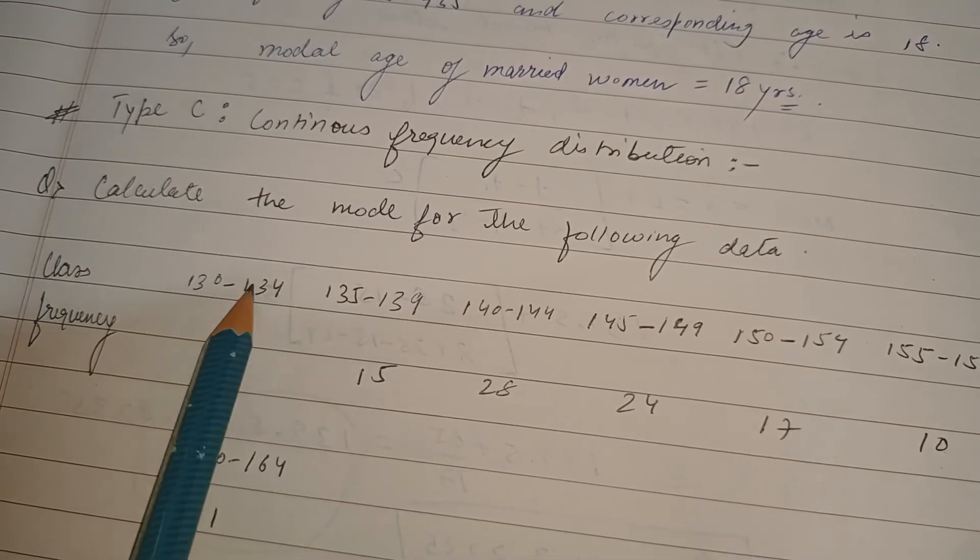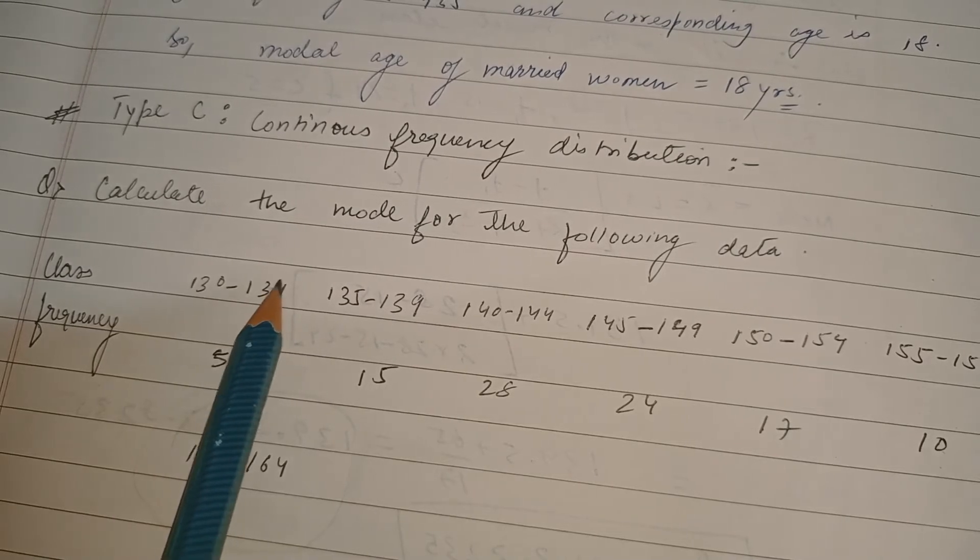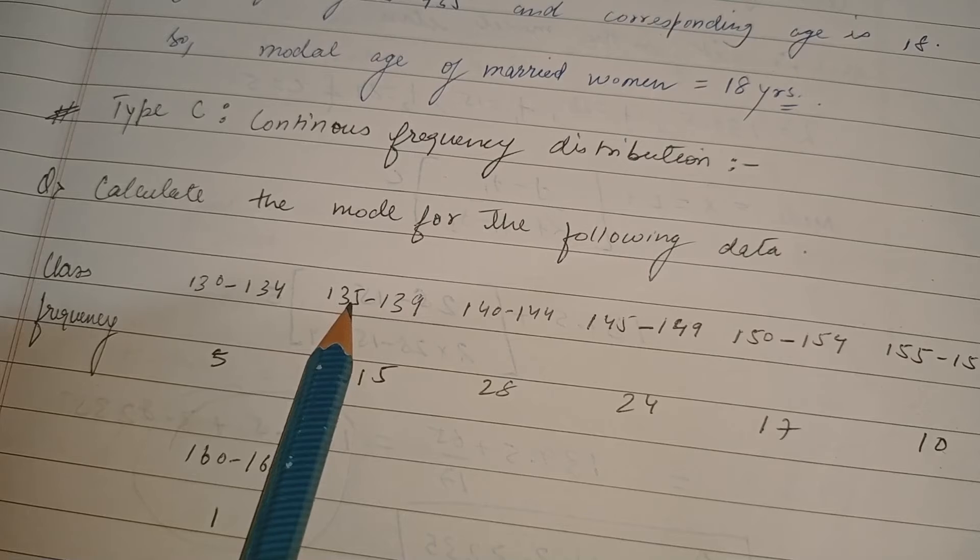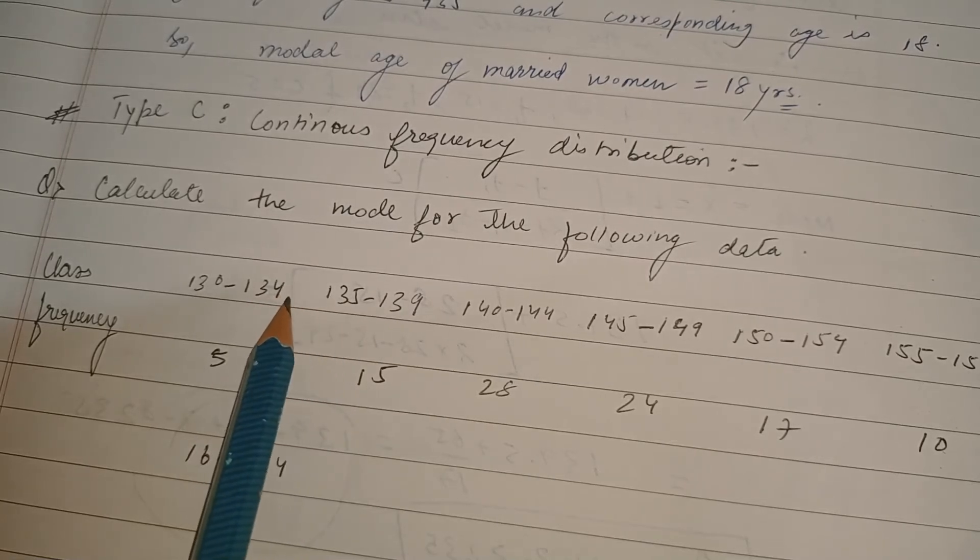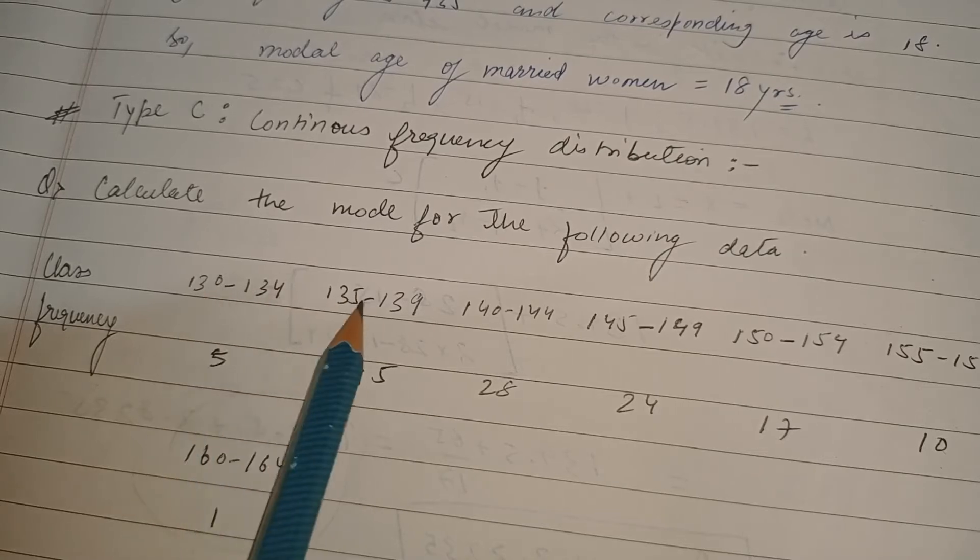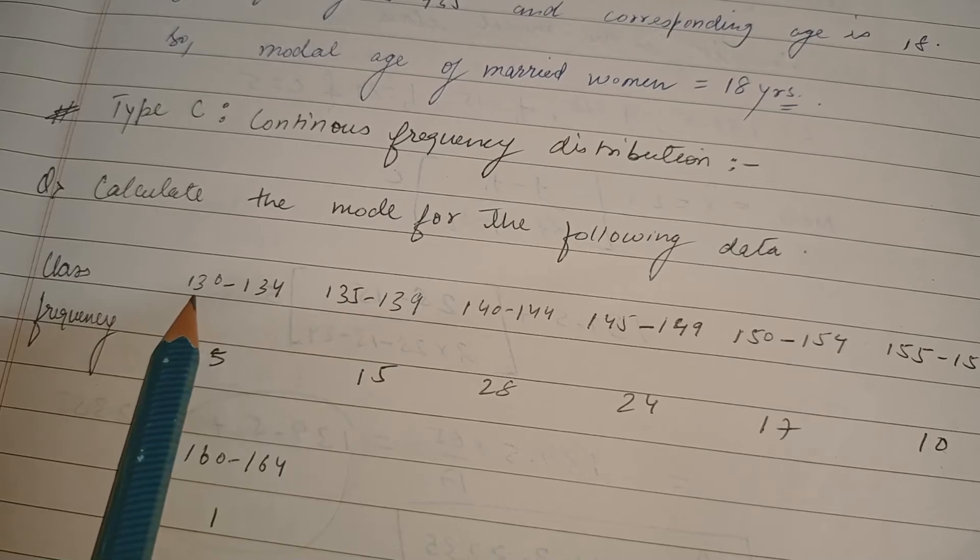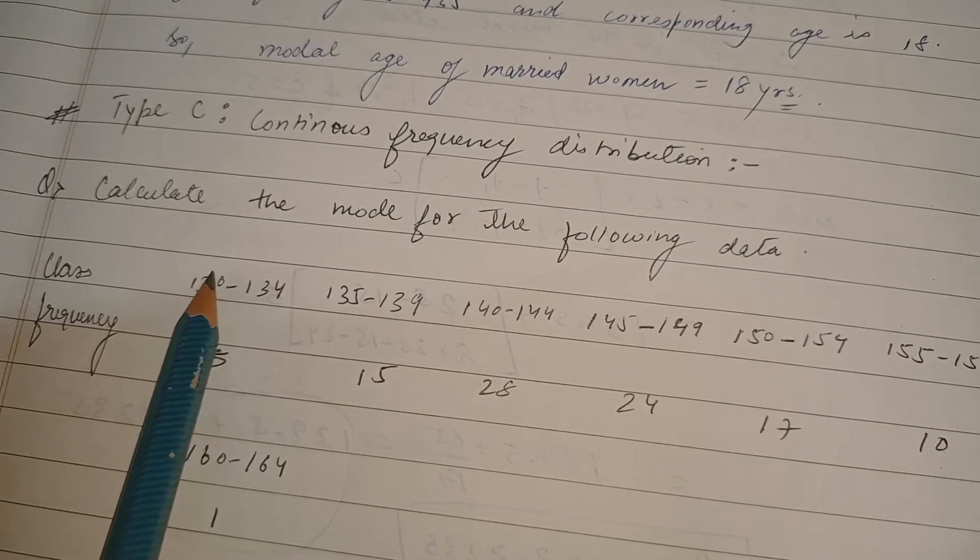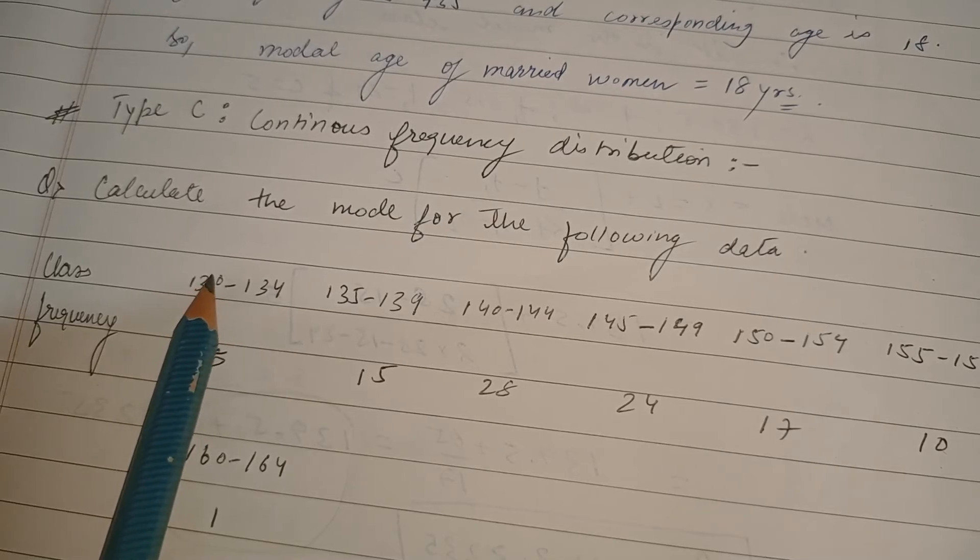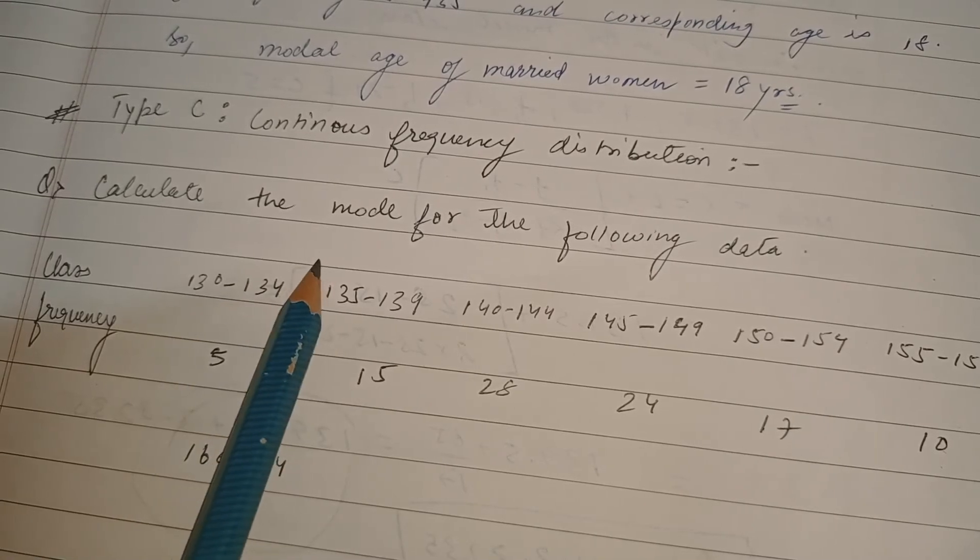Also notice that 134 is the upper bound of this class and 135 is the lower bound of second class, but that is not how continuous frequency distribution should be. We should make them continuous, not continuous but inclusive. So 130 to 134, what we need to do is subtract 0.5 from the lower bound, 130 minus 0.5, and add 0.5 to the upper bound, 134 plus 0.5.